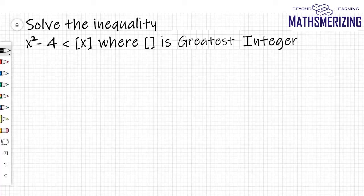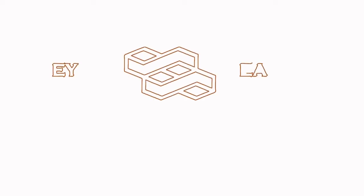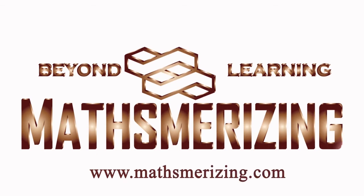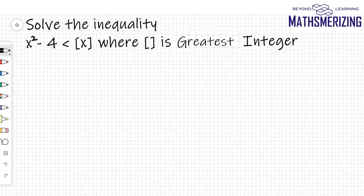The question is solve the inequality x² - 4 is less than the greatest integer function of x. What I'll do is draw the graph of y = x² - 4 and draw the graph of y = greatest integer function of x.